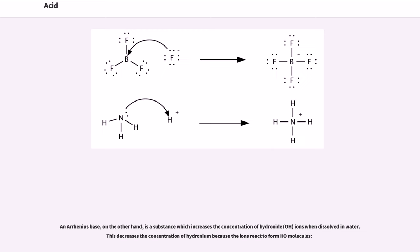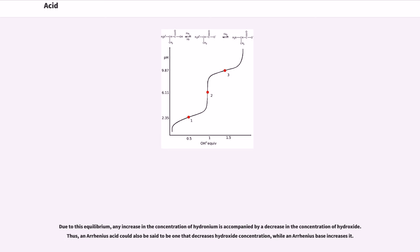An Arrhenius base, on the other hand, is a substance which increases the concentration of hydroxide (OH-) ions when dissolved in water. This decreases the concentration of hydronium because the ions react to form H2O molecules: H3O+ plus OH- yields 2 H2O. Due to this equilibrium, any increase in the concentration of hydronium is accompanied by a decrease in the concentration of hydroxide. Thus, an Arrhenius acid could also be said to be one that decreases hydroxide concentration, while an Arrhenius base increases it.